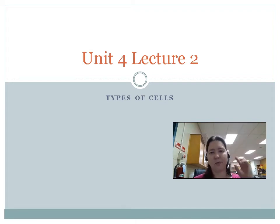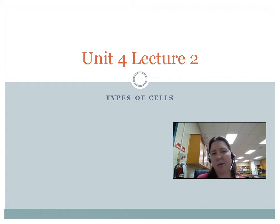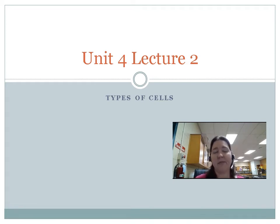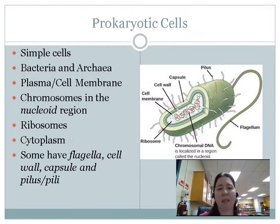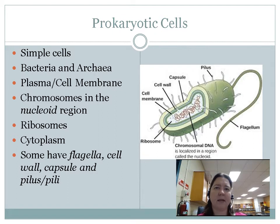Welcome to Unit 4, Lecture 2. In this lecture, it's going to be pretty short, but it's going to basically cover the differences between a few different types of cells. There are three main types of cells: prokaryotic cells, and plant and animal cells.